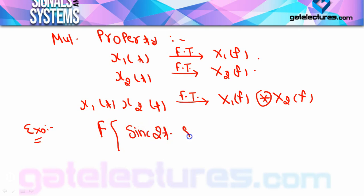मुझे sinc(2t)·sinc(3t) का Fourier transform calculate करना है। अब यहाँ पर problem यह है कि अगर मैं integration formula use करता हूँ Fourier transform का, तो x(t) है sinc(2t)·sinc(3t), मतलब sin(2πt)/(2πt) · sin(3πt)/(3πt), और फिर integration के अंदर e^(-j2πft) भी आता है। तो बहुत ही huge function हो जाएगा — exam में जितना time limit होता है, आप कभी भी integration से इसे solve नहीं कर पाएंगे।